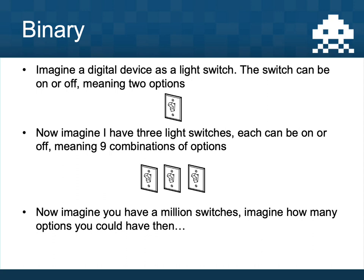Imagine a digital device is like a light switch that can either be on or off — two options. If you asked me a question I could turn my lights on for yes and off for no, but what about maybe or I don't know? Now imagine three light switches in series representing three light bulbs. With three bulbs I can represent many different combinations: all off for no, all on for yes, one on for I don't know, and so on. As I increase the number of switches, I massively increase the number of options — imagine a million light switches in a row.